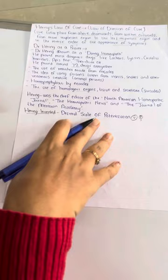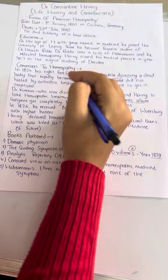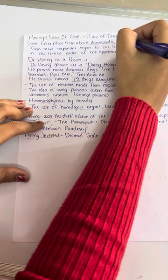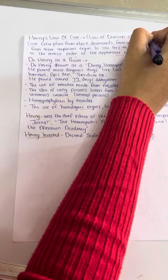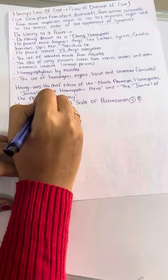In today's video, he is known as the father of American homeopathy, birth date, death anniversary, education. What was the conversion history of Dr. Herring to homeopathy? What were the different books authored? After that, Herring's law of cure, which is also known as direction of cure. Don't confuse - Herring's law of cure and direction of cure is one and the same thing. Dr. Herring as a prover, Dr. Herring's different positions, and Herring invented the decimal scale of potentization.